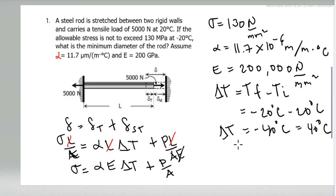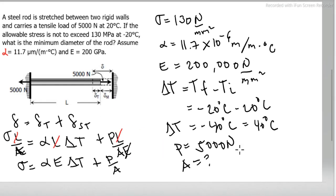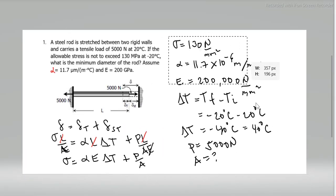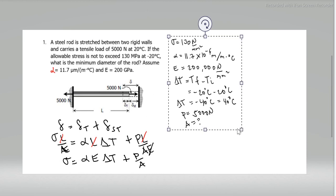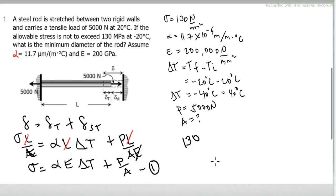And then the P is 5000 Newton, and then area which is unknown. Substitute that into the formula equation 1. So let's name this equation 1.